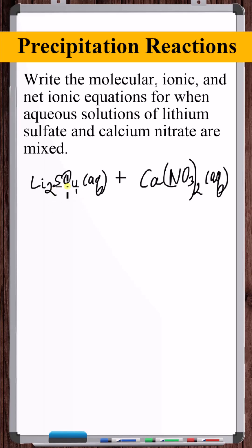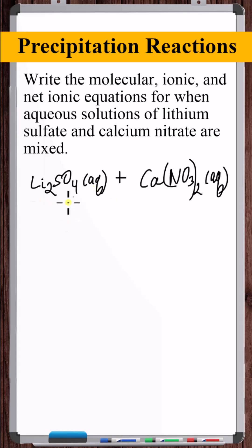Now in actuality, these are strong electrolytes — ionic compounds — and they are fully broken up into ions. But in the molecular equation, we just leave these full chemical formulas as written.